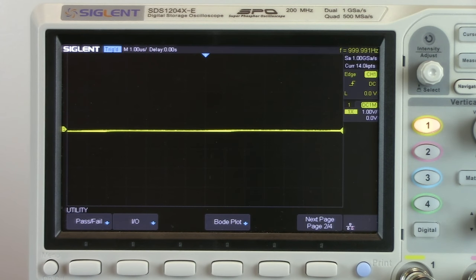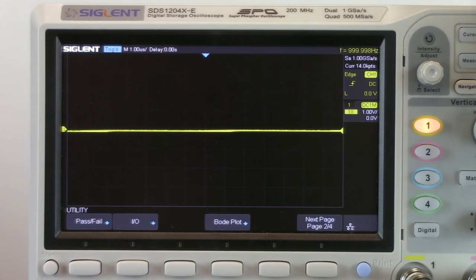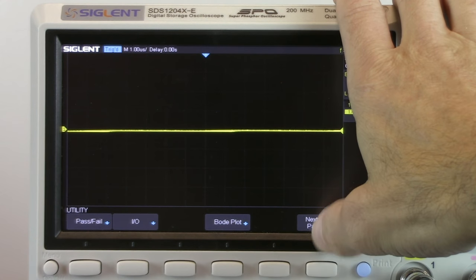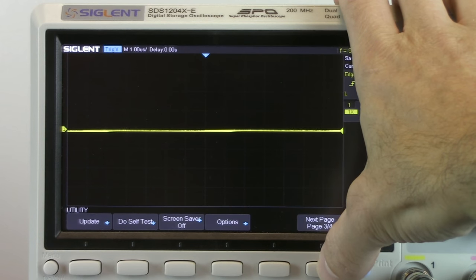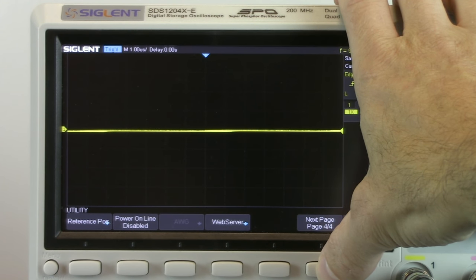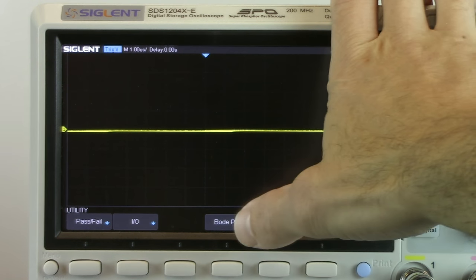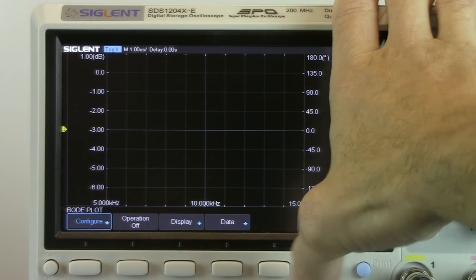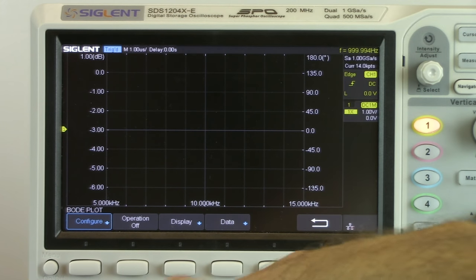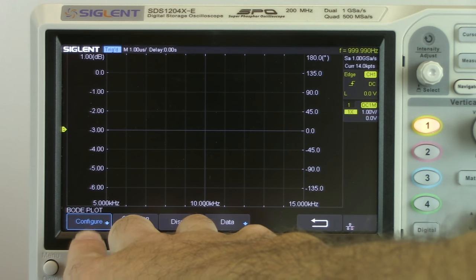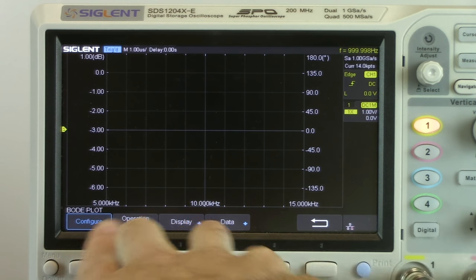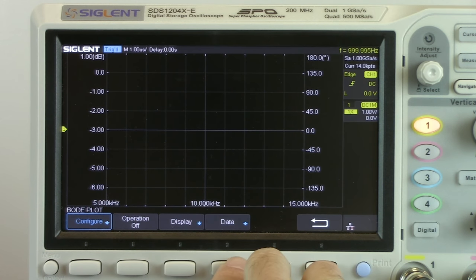Now that we've configured the SDG we can move on to the oscilloscope and its configuration. So we want to press utility and press the next page until we get to Bode plot. And you can see it here, it's on page 2. So we'll just cycle through, and now we're back to Bode plot. So now we've got pressing Bode plot. What that's going to do is change the display and give us another configuration menu. Here we've got configure, operation on and off, display, and data.